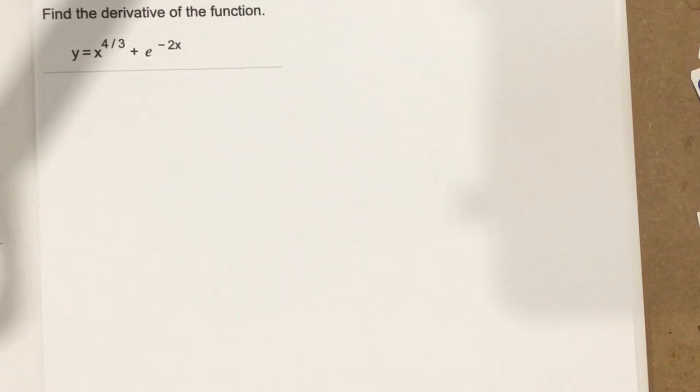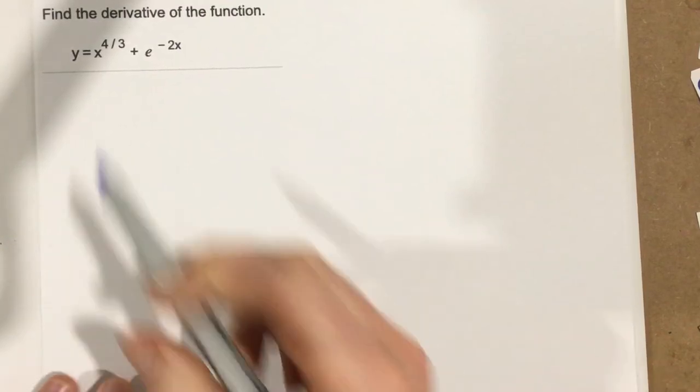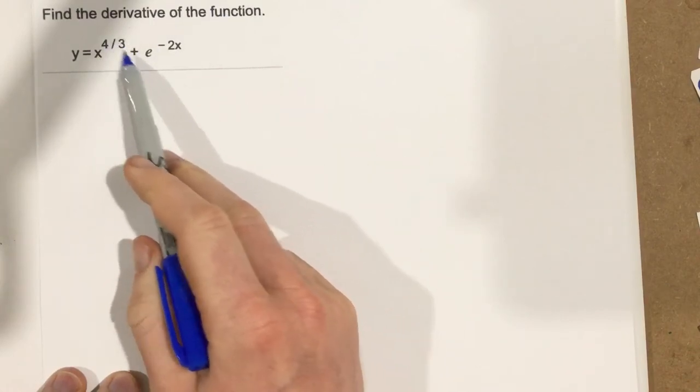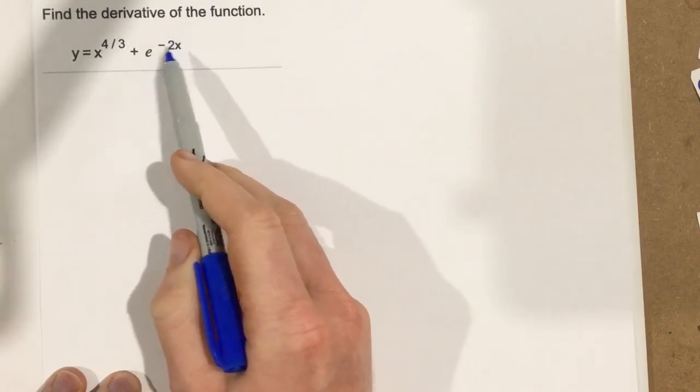This is problem number 9 from section 3.3, and this problem says find the derivative of the function y equals x to the four-thirds plus e to the negative 2x.